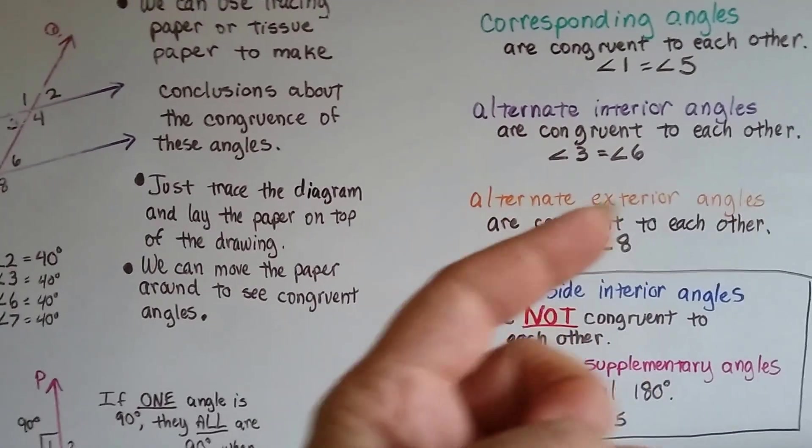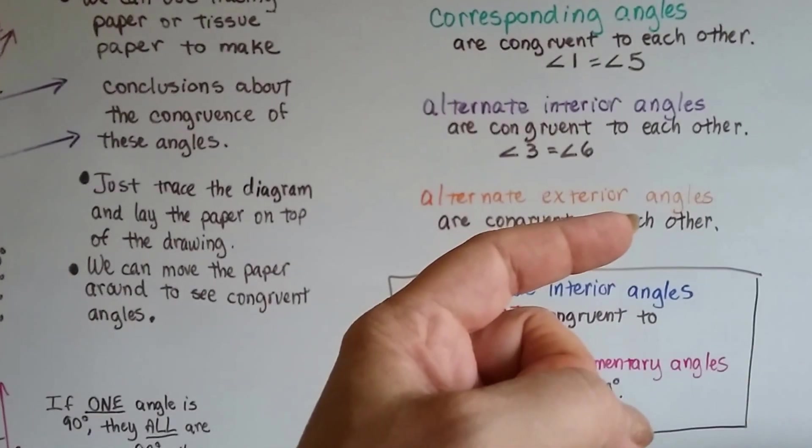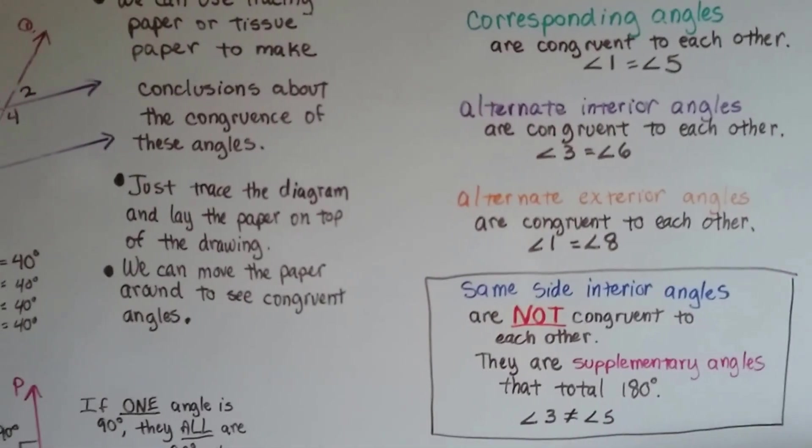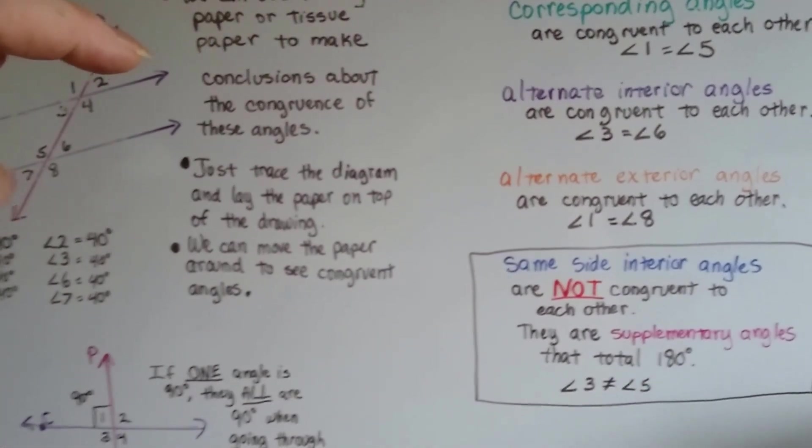And then the alternate exterior. Alternate means on opposite sides of the transversal. Exterior means outside of the parallel lines. So the alternate exterior angles would be 1 and 8 and 2 and 7.